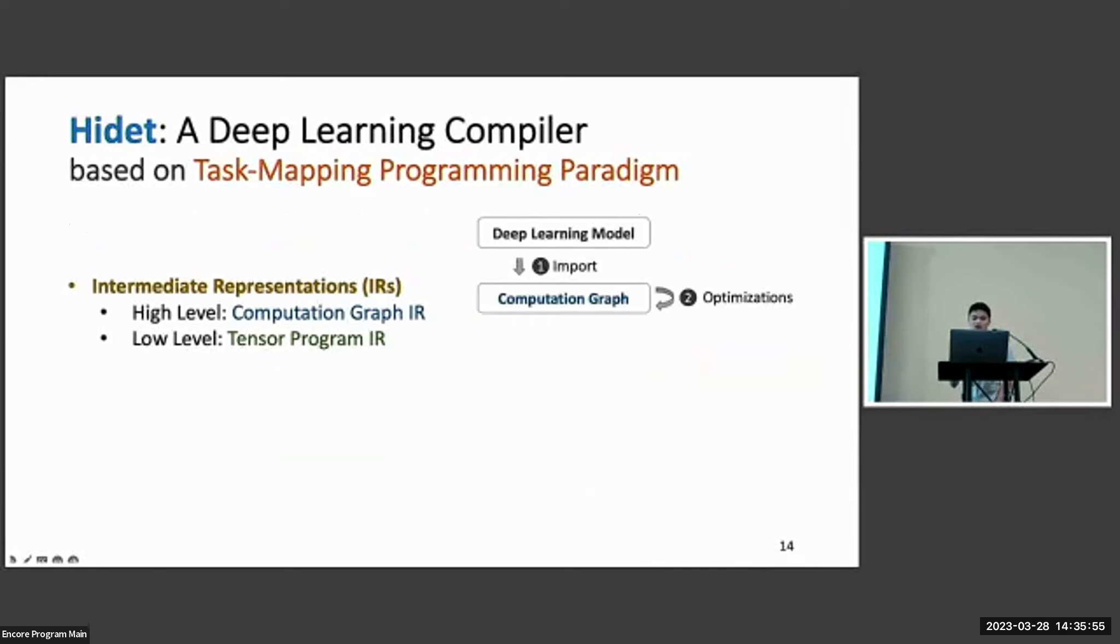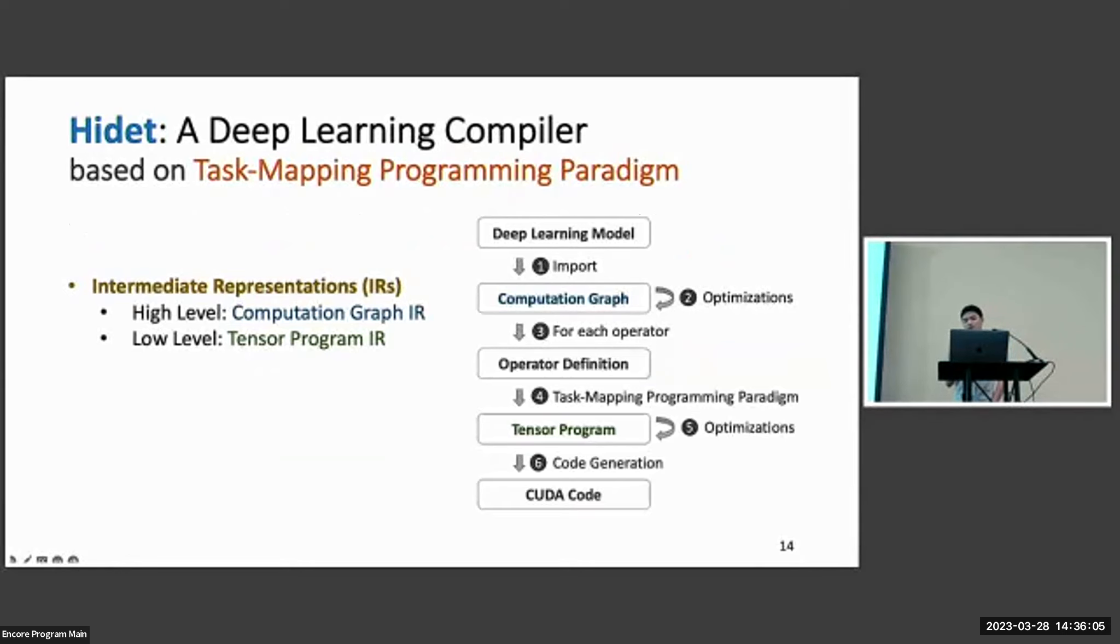Given a deep learning model that has been trained in PyTorch, we can import that to a computation graph IR in Hidet and do some graph-level transformations. For each operator, we will use task mapping programming paradigm to schedule it into a concrete tensor program. A bunch of optimizations are applied and generate the target code. Please read our paper to learn more about the two scheduling mechanisms in the task mapping scheduling step and the post-scheduling fusion. We can also discuss in the poster session.